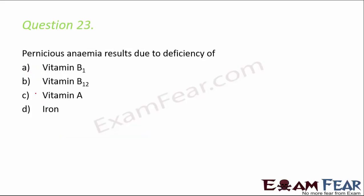Question number 23: pernicious anemia results due to deficiency of vitamin B1, B12, vitamin A, or iron? The correct option is B, vitamin B12. The deficiency of vitamin B1 can cause diseases like beriberi or loss of appetite, known as anorexia.